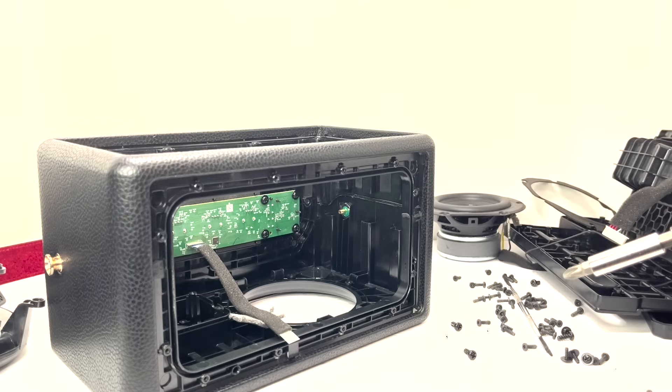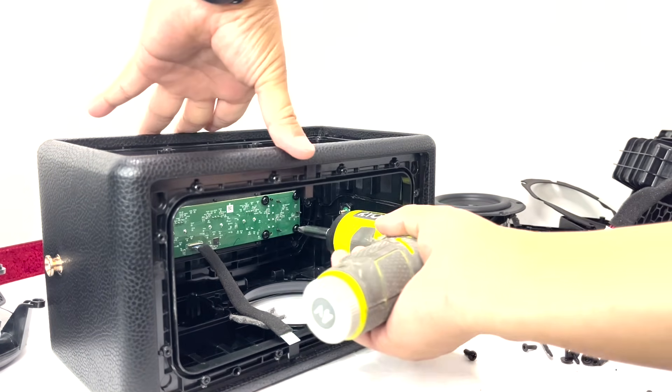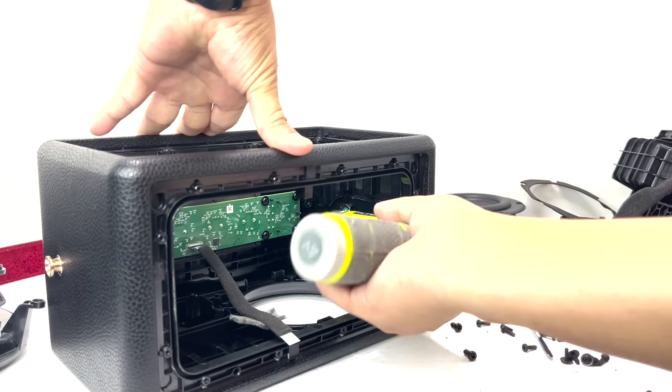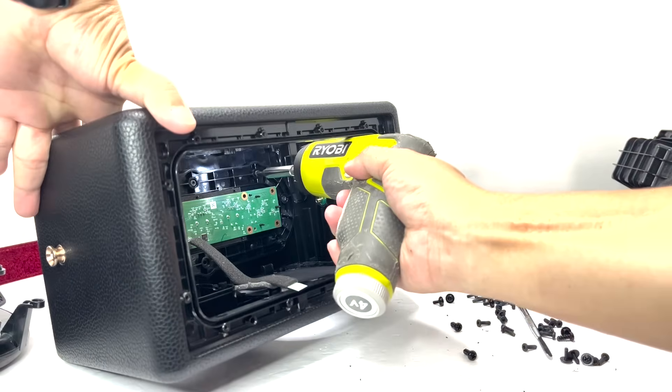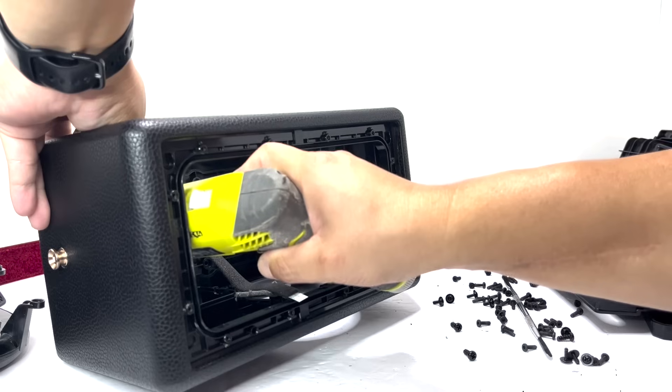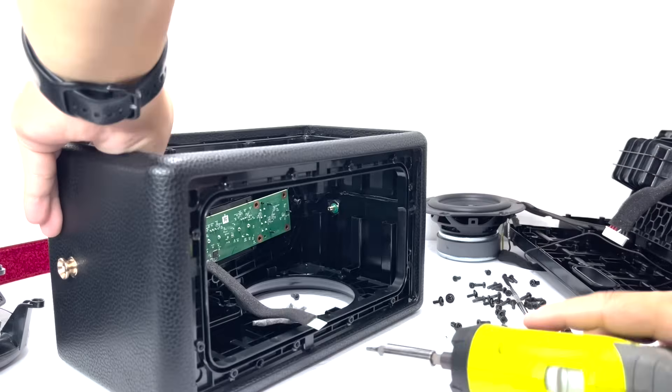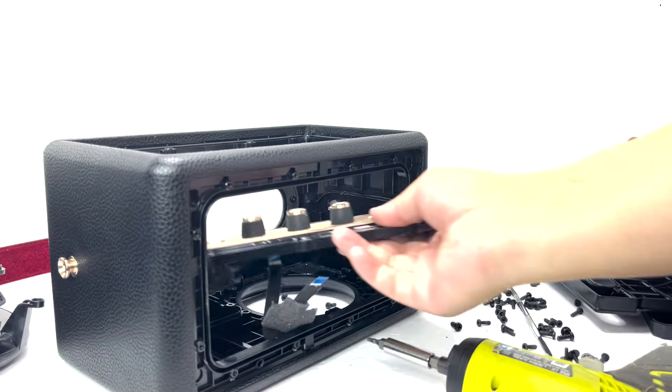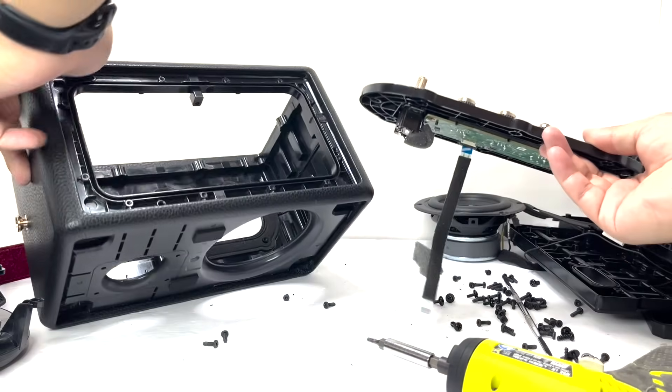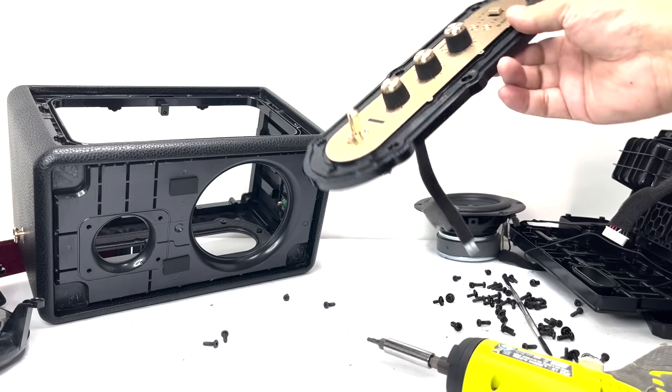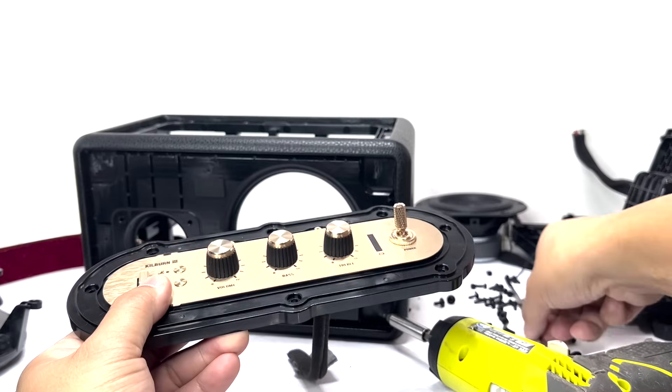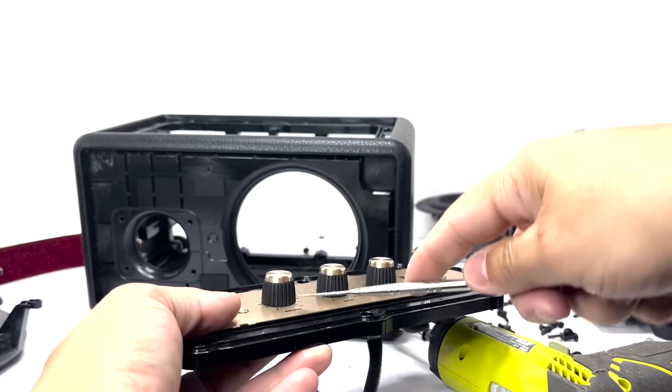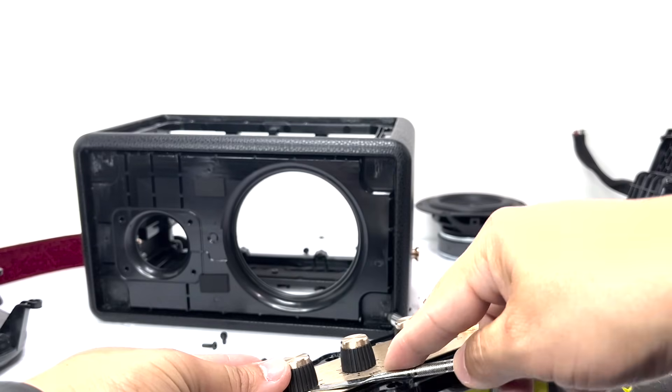Next we unscrew 6 screws for the control board and 8 screws for the panel it's mounted on. To fully detach it, we will need to loosen the knobs and toggle switch from the front.